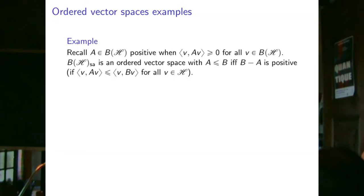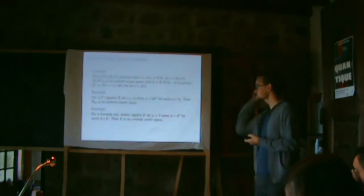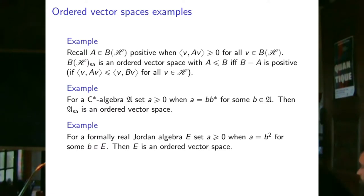Examples: for bounded operators on a Hilbert space, we call an operator positive when it has a non-negative expectation value on all vectors. The self-adjoint operators form an ordered vector space where a ≤ b if and only if b − a is positive. Another example: for an arbitrary C*-algebra, an element a is positive when there exists some b such that a = b*b, and the self-adjoint elements also form an ordered vector space.